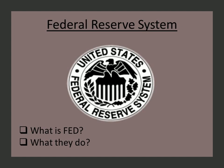The Federal Reserve System is the central bank of the United States. It performs five general functions to promote the effective operation of the U.S. economy and, more generally, the public interest. Let us see each of the functions of the Fed.